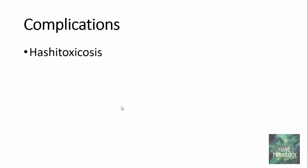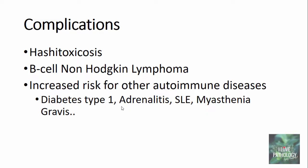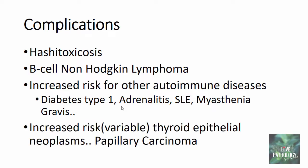The complications of Hashimoto's Thyroiditis include: first, Hashimoto's toxicosis — in the initial stages, destruction of thyroid follicular epithelial cells releases T3 and T4 hormones into circulation, causing a transient hyperthyroid state. Second, the infiltrated lymphoid cells can undergo clonal proliferation and may result in the formation of B-cell non-Hodgkin lymphomas. Third, there is an increased risk for other autoimmune diseases like Type 1 diabetes, adrenalitis, systemic lupus erythematosus, and myasthenia gravis. Lastly, there is a risk for thyroid epithelial neoplasms, particularly papillary carcinoma of the thyroid — though this is an association, whereas non-Hodgkin lymphoma is a direct complication arising from Hashimoto's Thyroiditis.